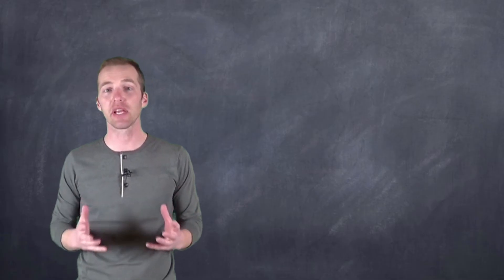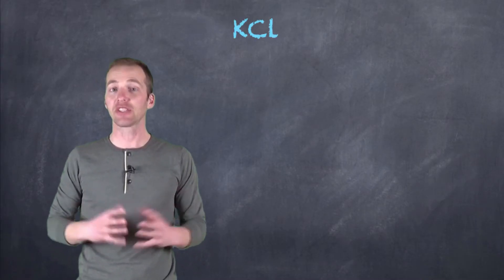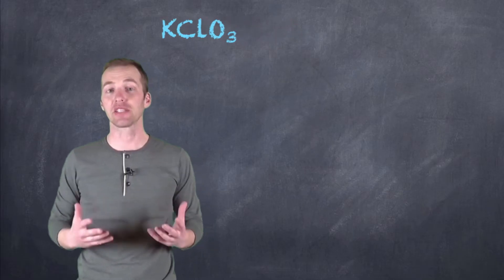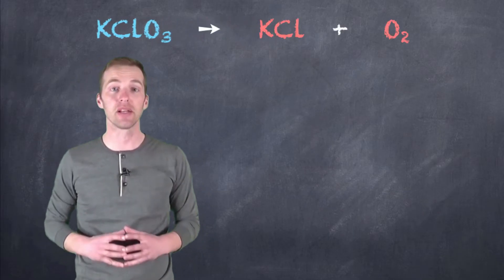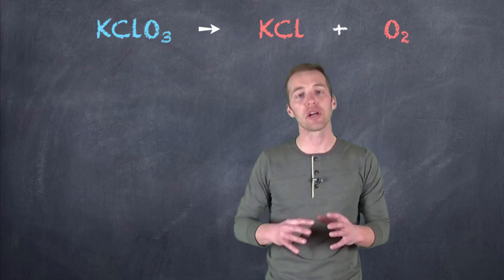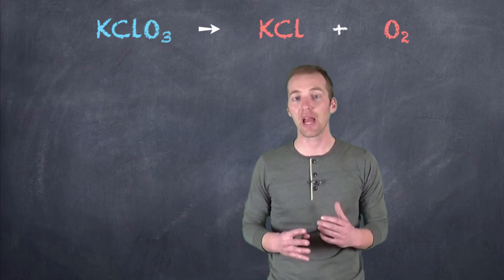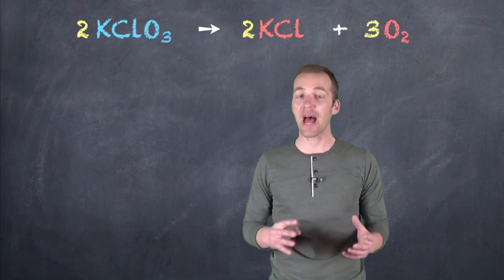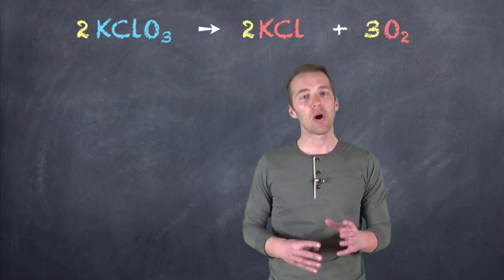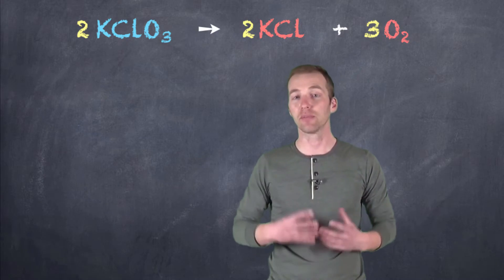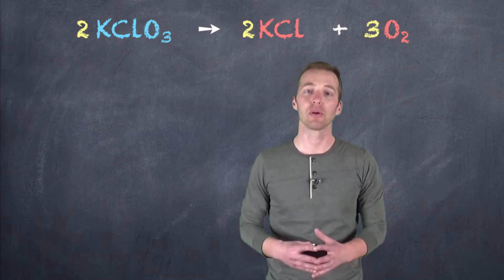To introduce stoichiometry, we're going to take a look at a balanced chemical equation. The reaction we're going to look at is the one in which potassium chlorate decomposes into potassium chloride and oxygen gas. Notice there are a whole bunch of numbers involved in this chemical reaction — not only the numbers of atoms in each compound or molecule, but also the number of compounds and molecules themselves in order to balance out that chemical equation.